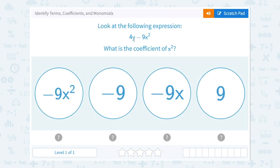So in this example, we'd have two terms. 4y is one term, and negative 9x squared is the other term.